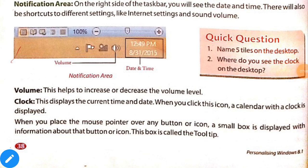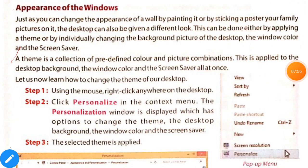Volume helps to increase or decrease the volume level. The clock displays the current time and date; when you click this icon, a calendar with a clock is displayed. When you place the mouse pointer over any button or icon, a small box is displayed with information about that button or icon. This box is called a tool tip. This was the first video of Chapter 4; I will discuss the appearance of Windows in the next video.